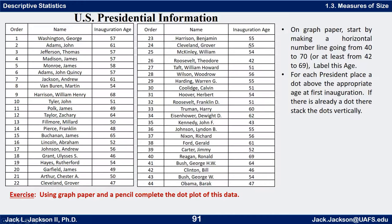I want to omit the second line for Cleveland and only put one for Cleveland. Go ahead and do this on your own and see if you can come up with a dot plot. Press pause now.